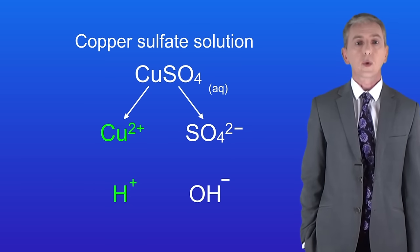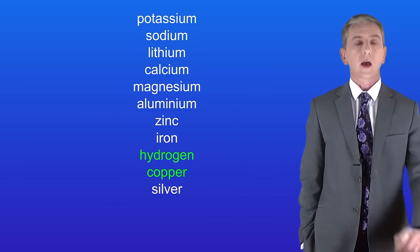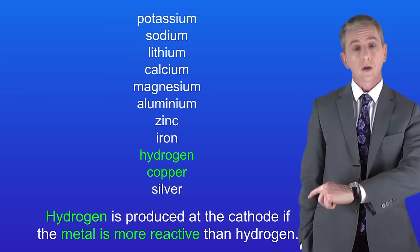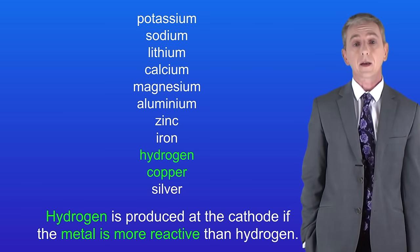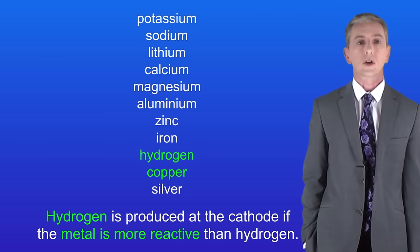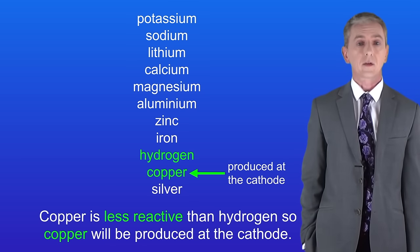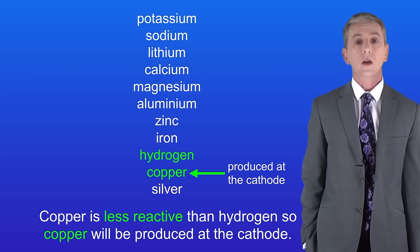So the question is which of these two ions will be reduced at the cathode? To answer that we need to look at the reactivity series. Hydrogen is produced at the cathode if the metal is more reactive than hydrogen. In this case copper is less reactive than hydrogen. This means that copper will be produced at the cathode not hydrogen.